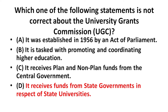Option D is NOT correct because it states that the UGC receives funds from the state government in respect of state universities — this is wrong. To summarize about the UGC: it was established in 1956, it promotes and coordinates higher education, and it receives plan and non-plan funds from the central government.